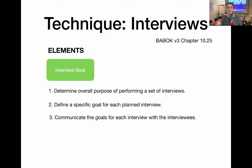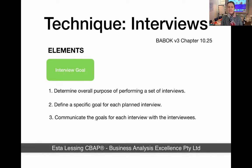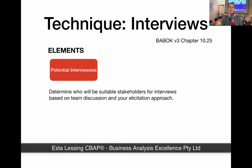It's about communicating the goals for each interview to your interviewees. The second element is about identifying who will be your interviewees — which stakeholders do you need to set up interviews with? It's often a good idea to run this past your project team. This will also form part of your BA approach and your stakeholder analysis — it all comes together in determining who will be interviewed and why certain people would be selected.